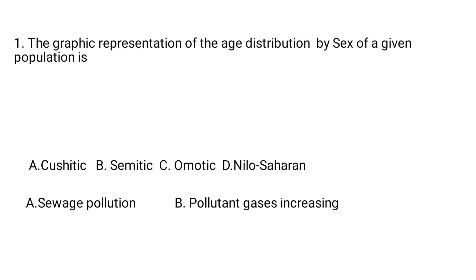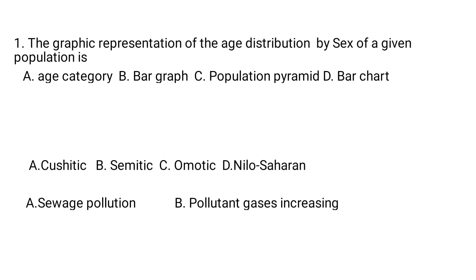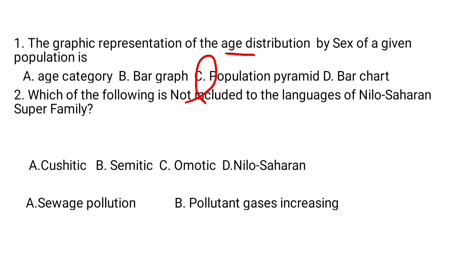Question number 1. The graphic representation of the age distribution by sex of a given population is: A. Age category, B. Bar graph, C. Population parameter, D. Bar chart. Students, I give you 5 seconds. Good. Population parameter is the graphic representation that indicates the distribution of population by age and sex.